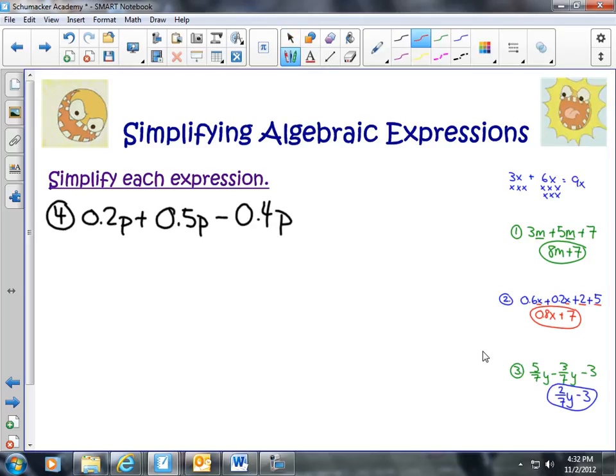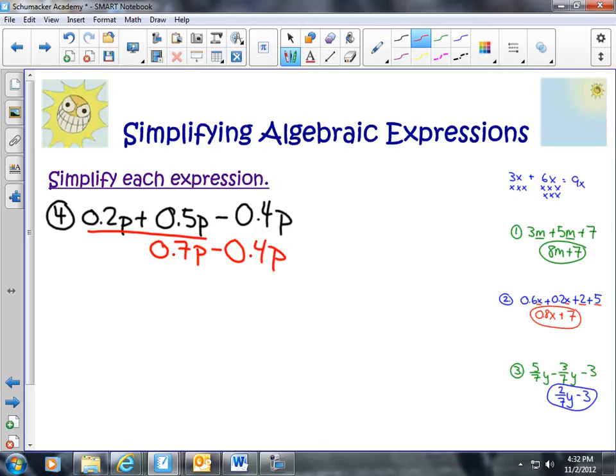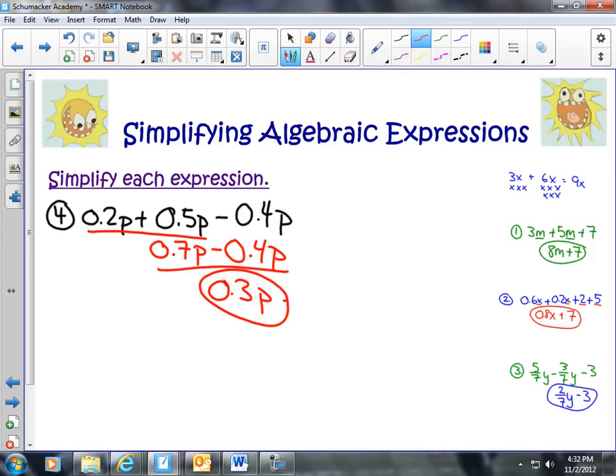So we're going to go ahead and we are going to add these together. I have 0.2 plus 0.5 is 0.7p minus 0.4p. Now I'm going to subtract 0.7 minus 0.4 will get me 0.3p. And so I can simplify that down to just 0.3p.